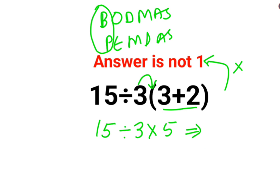At this point, what happens is people would do this first. So we will get this as 15 divided by 15, and that is how you will end up with 1.